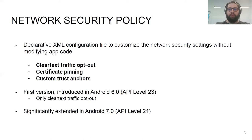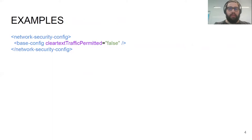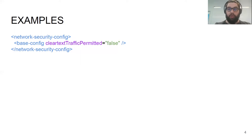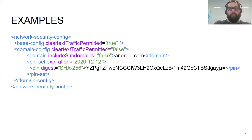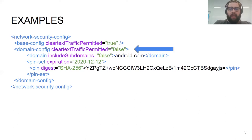The best way to present the network security policy is through a series of examples. The first one, probably very obvious, is a policy where we completely forbid any clear text connection from the application — meaning no domain can be reached through HTTP. A slightly more complex example: this time we permit clear text traffic from the entire application so all domains can be reached through HTTP. However, when we try to contact the android.com domain, we must do it securely through HTTPS.